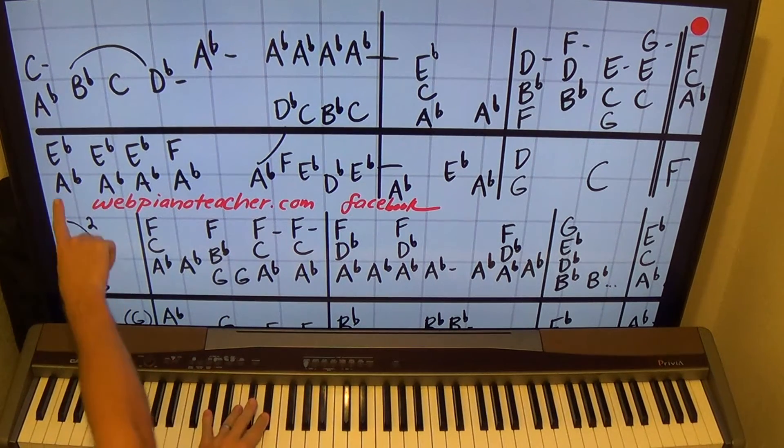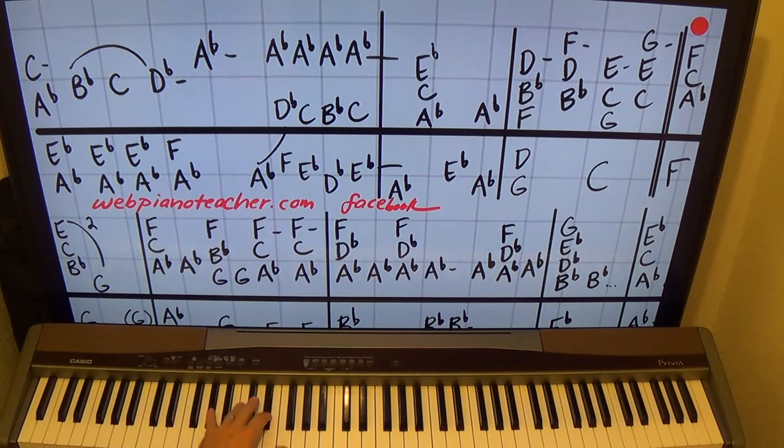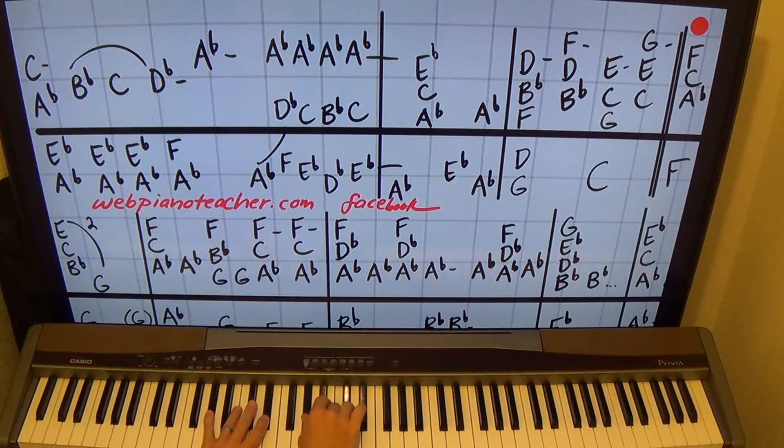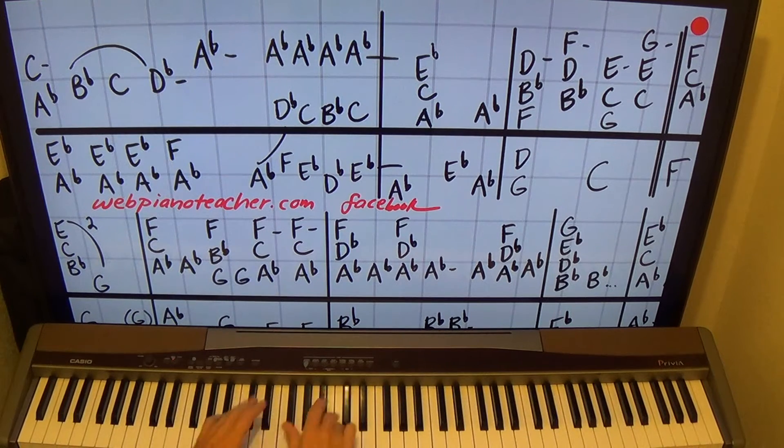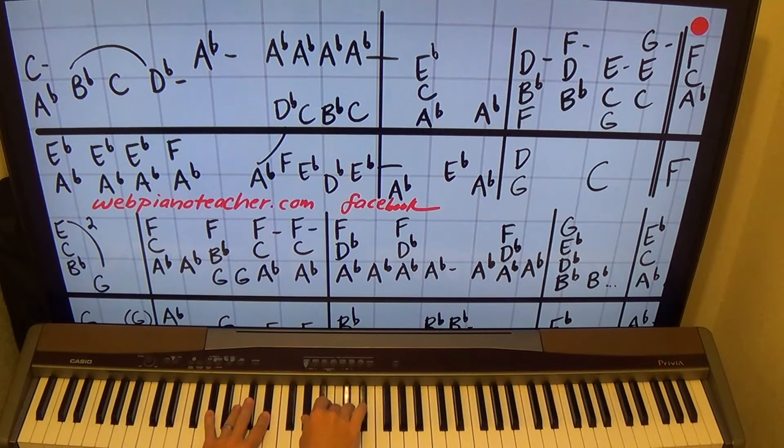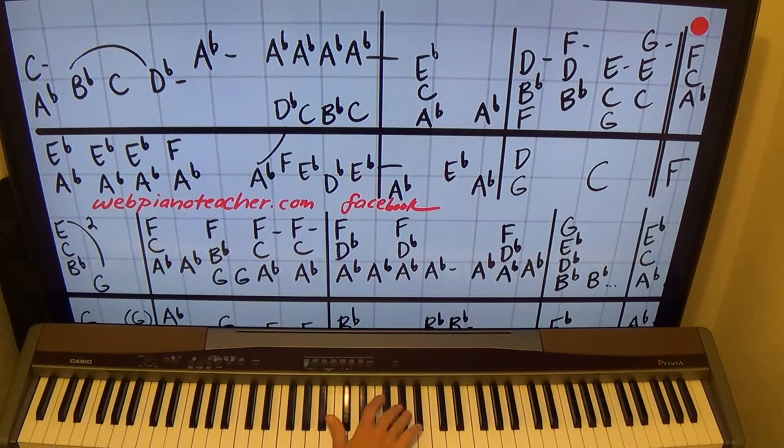So the beginning hands together is one, two, three. Make sure you have that little space in there. Don't pedal it all through. Two, three, and she plays the A-flat and then...